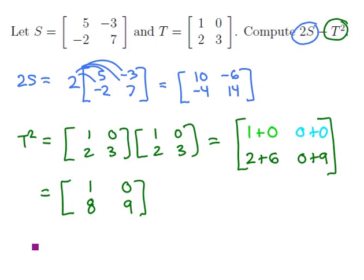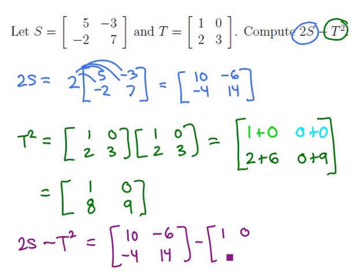Now having worked out the two matrices individually, we can actually work out their linear combination. So we take the matrix 2S, which we worked out here, we'll subtract the matrix T squared, which we've worked out here, and we'll do the subtraction term by term.